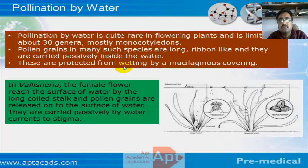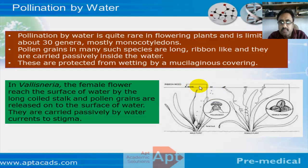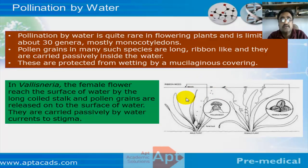Let's discuss some unique pollination mechanisms. In totally submerged plants, different mechanisms are adopted. For example, Vallisneria is a completely submerged plant. The female plant rises to the surface, and the male flowers are released and float to the surface. These male flowers then travel to the female flowers and effect pollination. Although the entire plant is submerged, only for pollination purposes do they come to the surface of the water.